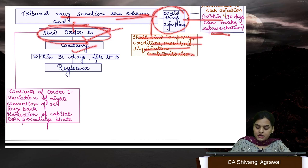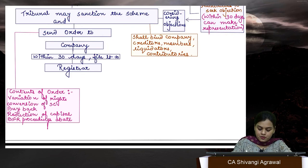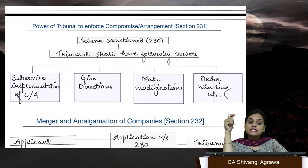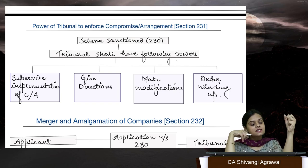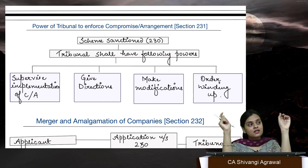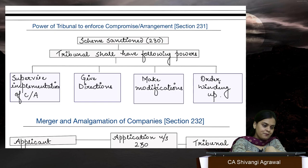The tribunal shall send the order to the company within 30 days to file with the registrar. The contents of the order include: variation of rights — if the compromise or arrangement is somehow altering the rights of shareholders, then you must follow section 48 for that purpose.